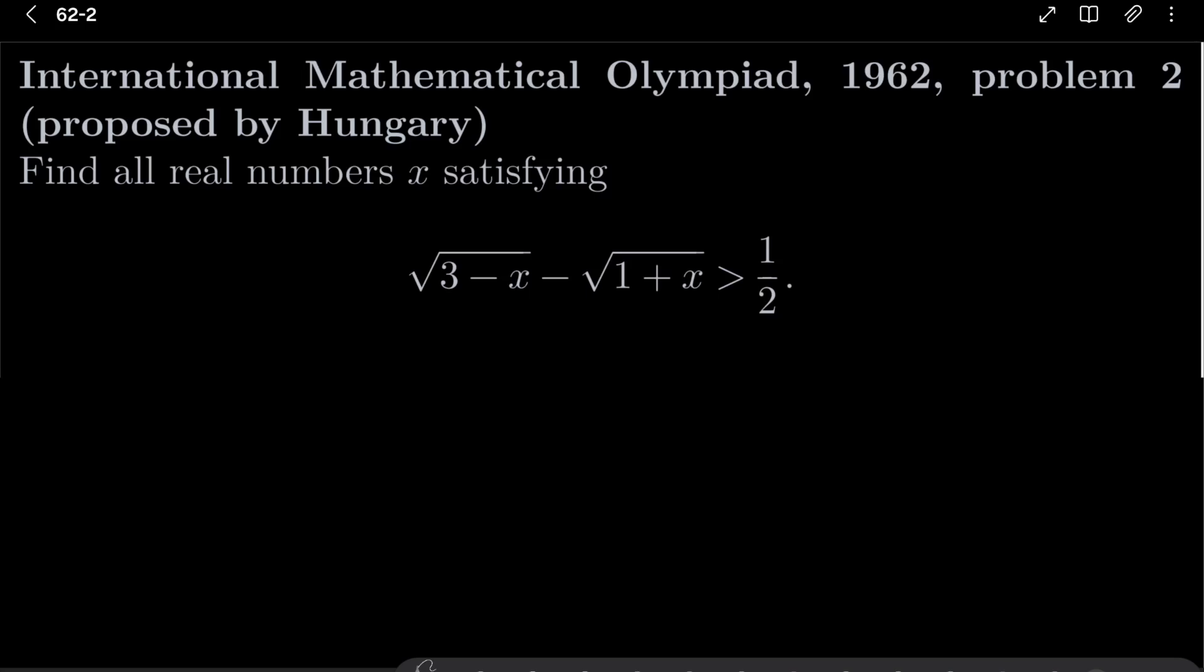So my hints for this problem are the following: try to put one square root on the right hand side, give the assumptions which are needed, and square both sides, and try to reduce our problem to a quadratic inequality. So give this problem a try.